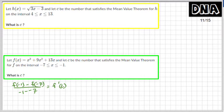So what is f prime? f prime of x is going to be 3x² + 18x + 13.